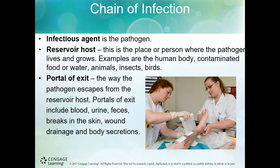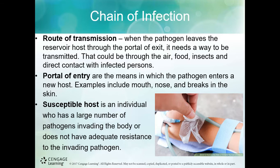The reservoir host can be the human body, contaminated food, water, or animals. There is a portal of exit — the way the pathogen escapes from the reservoir host, such as through blood, urine, or other body secretions. There is also a route of transmission, which is how the pathogen is transmitted — through the air, food, insects, or direct contact.